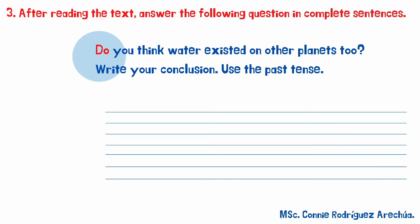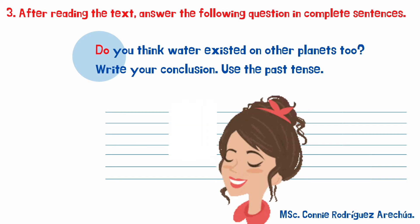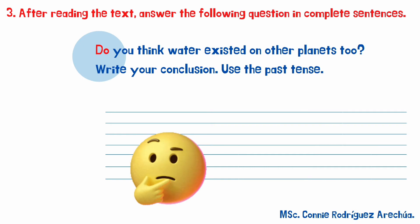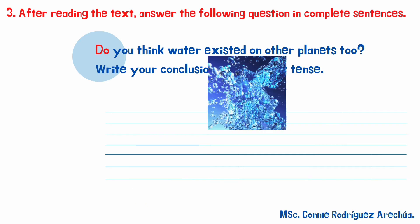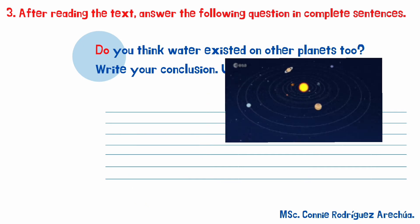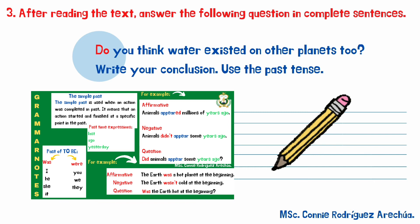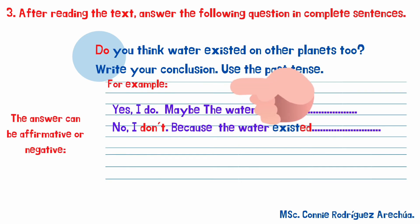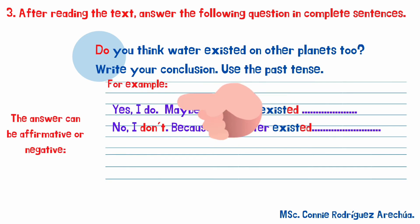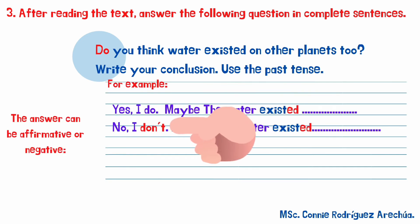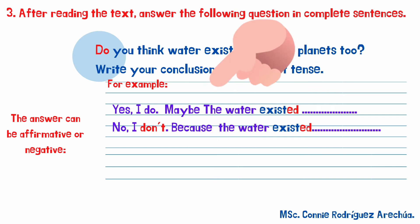Activity three: after reading the text, answer the following question in complete sentences — do you think water existed on other planets too? Write your conclusion using the past tense. The answer can be affirmative or negative. Look at the example.